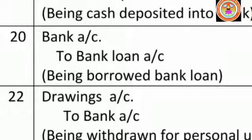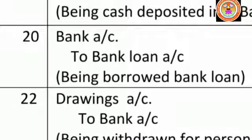Then, bank loan is a new liability — it arises newly. It is a responsibility for the proprietor. If any liability arises, that liability should be credited. We use our nominal account rule. Debit all expenses and losses, credit all incomes and gains. The name of the income here is bank loan account.